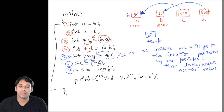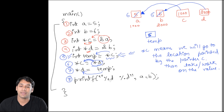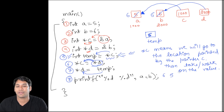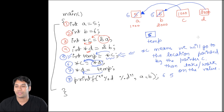In line 7, we do *d = temp. We store the value in temp, which is 5, into the location pointed by d, which is 2000 — that is variable b. So b now stores 5. In line 8, we print the values of a and b, and the output will be 6 and 5. There are also things that are allowed and not allowed when using pointers, which we will see next.